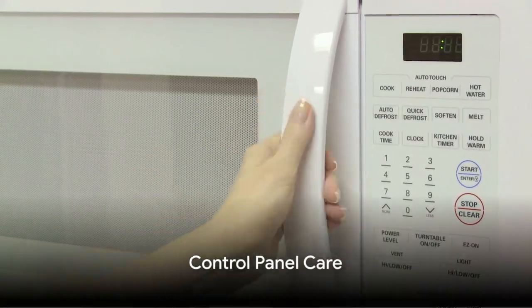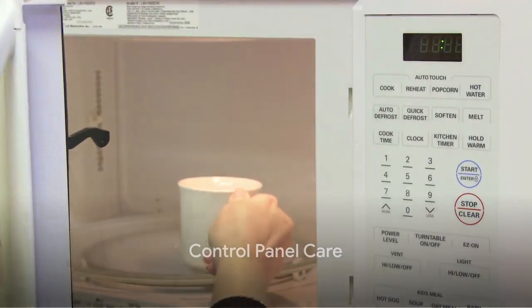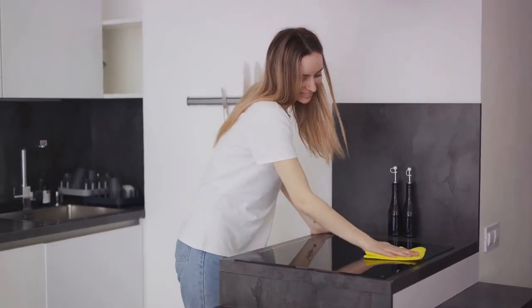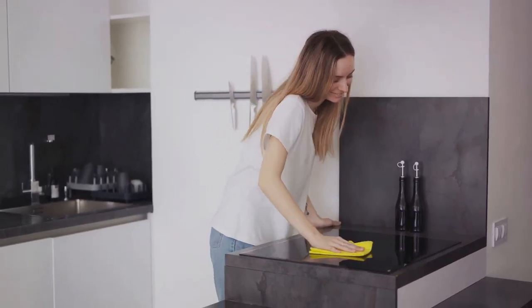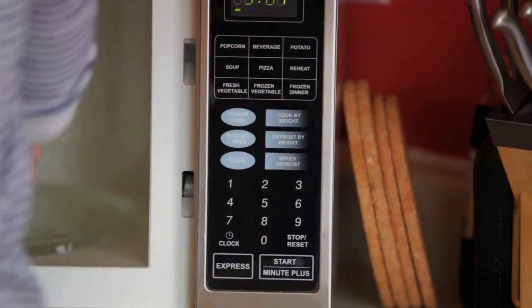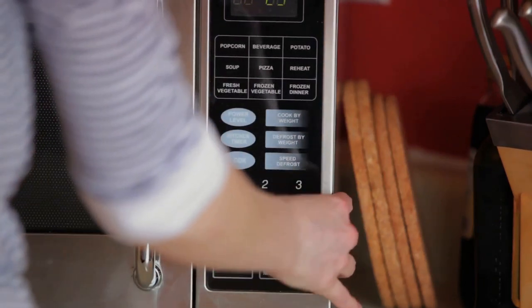Moving on to the control panel, this is the brain of your microwave. It deserves a gentle touch. Use a soft, damp cloth to clean the control panel and keypad. Avoid using harsh chemicals or abrasive cleaning tools that could damage the sensitive components.